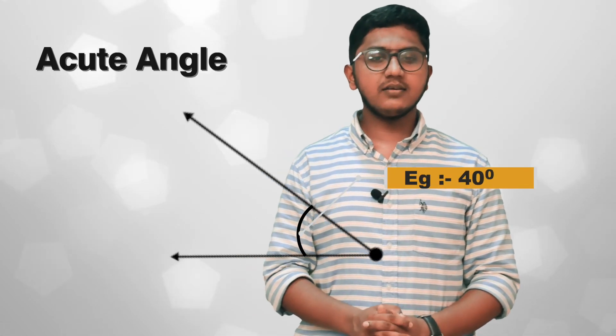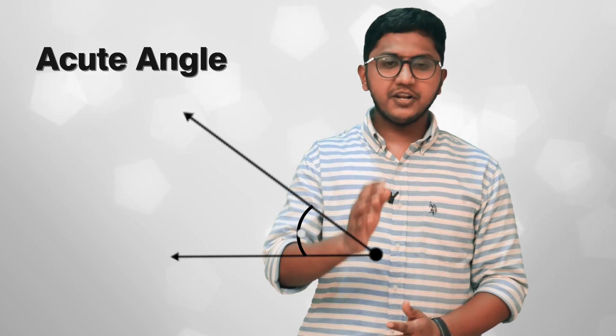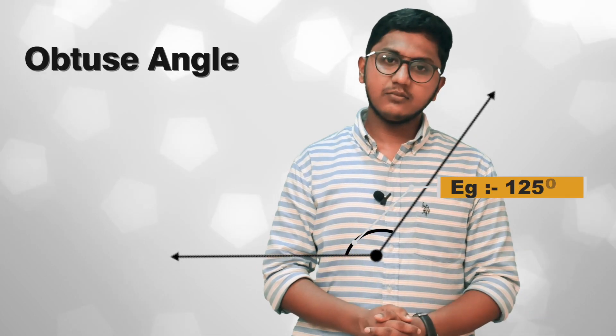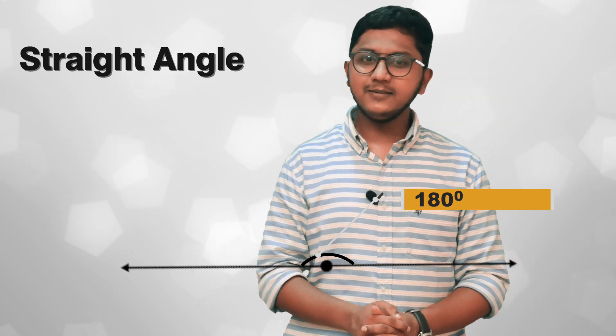So we will go with some visualization. Start rotating. Stop in between 0 to 90 — that's called acute angle. Continue the rotation. Stop at exact 90 — that's called right angle. Again, continue the rotation. Stop in between 90 to 180 — that's called obtuse angle. Continue the rotation and stop at exact 180 — that's called straight angle.